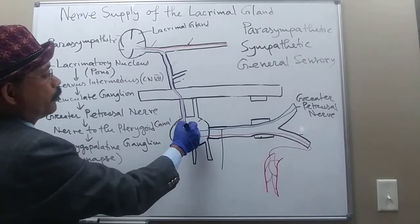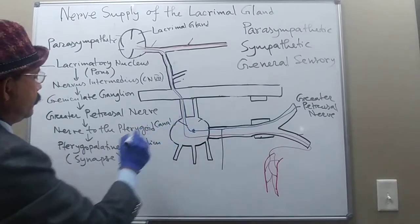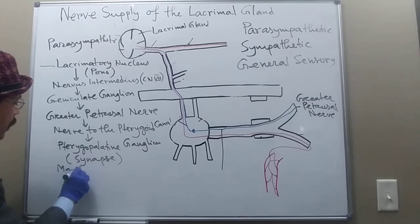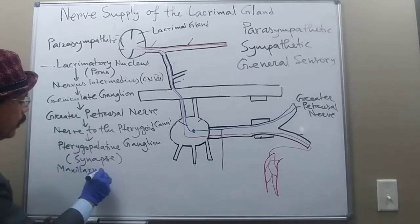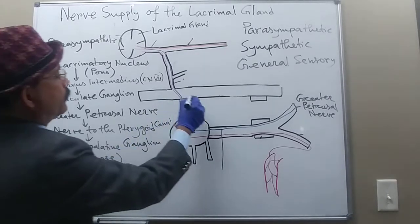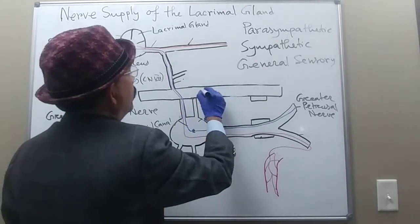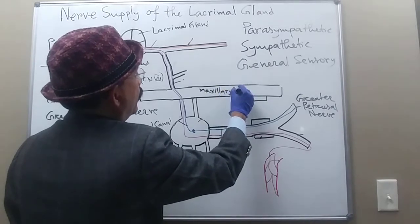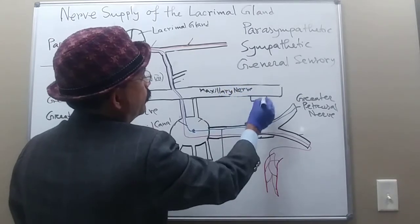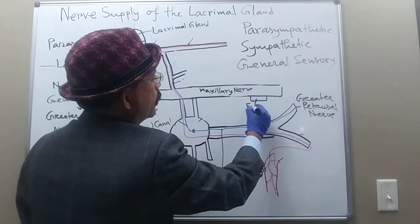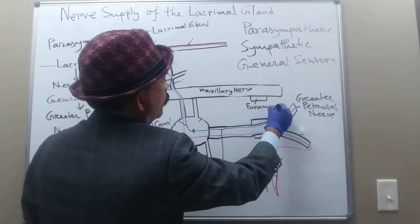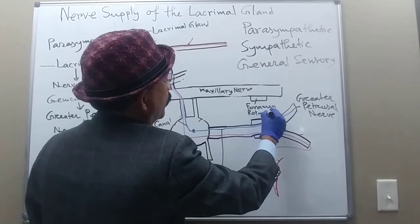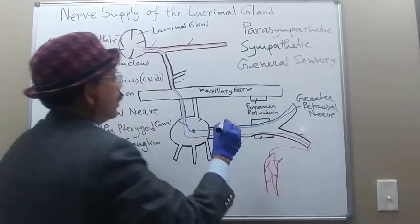From the pterygopalatine ganglion, the postganglionic fiber goes through the maxillary nerve. This is the maxillary nerve, which passes through the foramen rotundum.